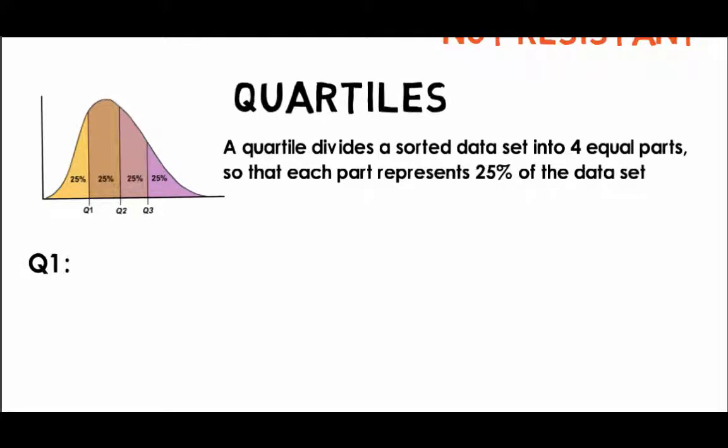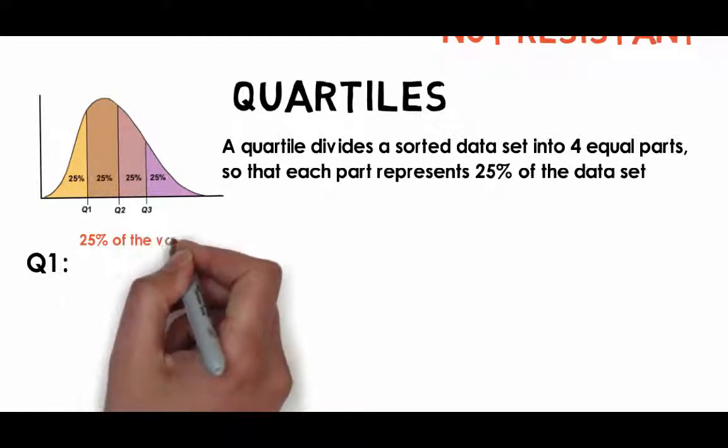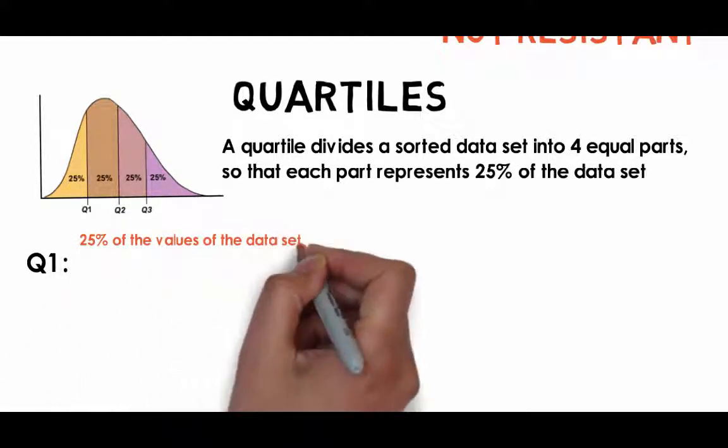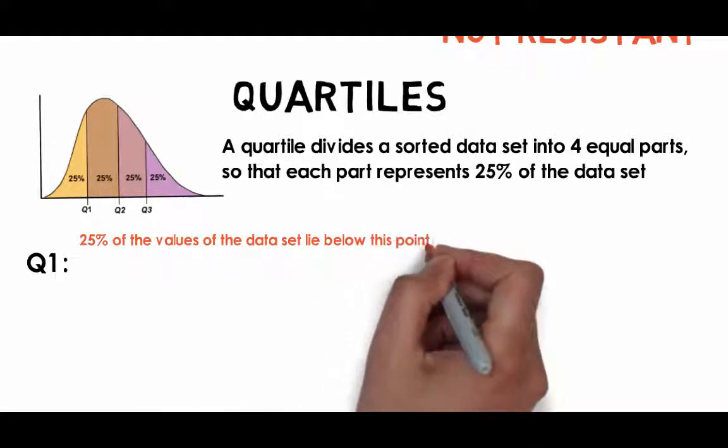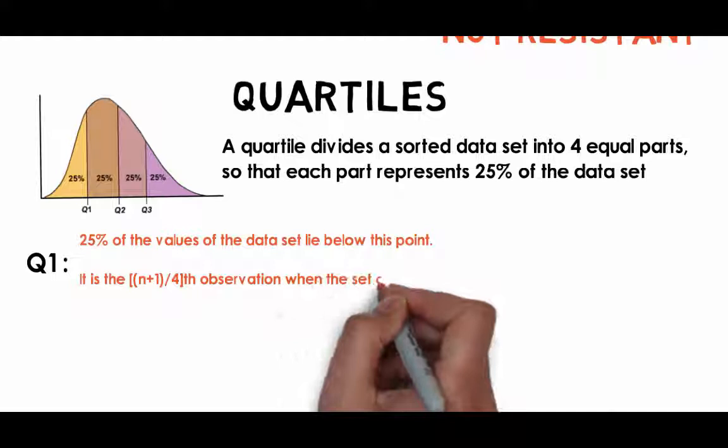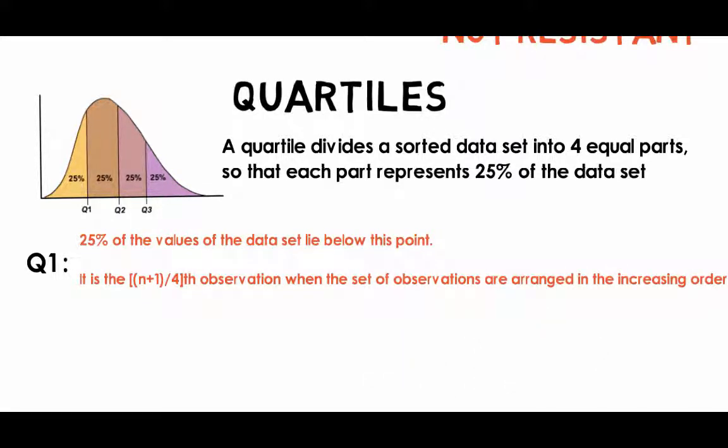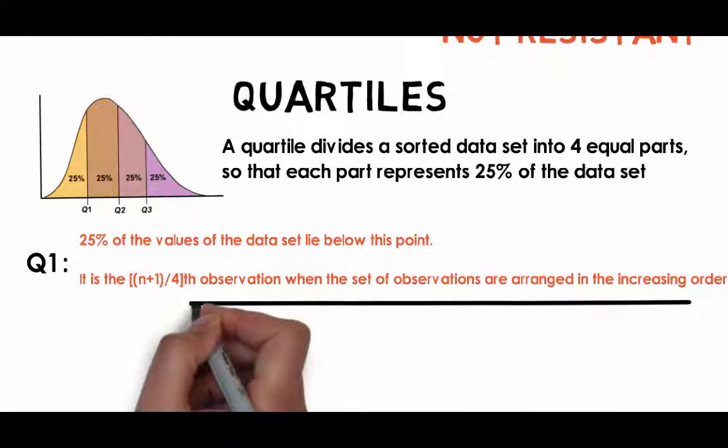Q1, also known as the first quartile, is that value that separates the bottom 25% from the top 75% values. Basically, 25% of the values of the data set lie below this point. It is the n plus 1 by 4th observation where the set of observations are arranged in the increasing order, where n is the number of observations in the data set.